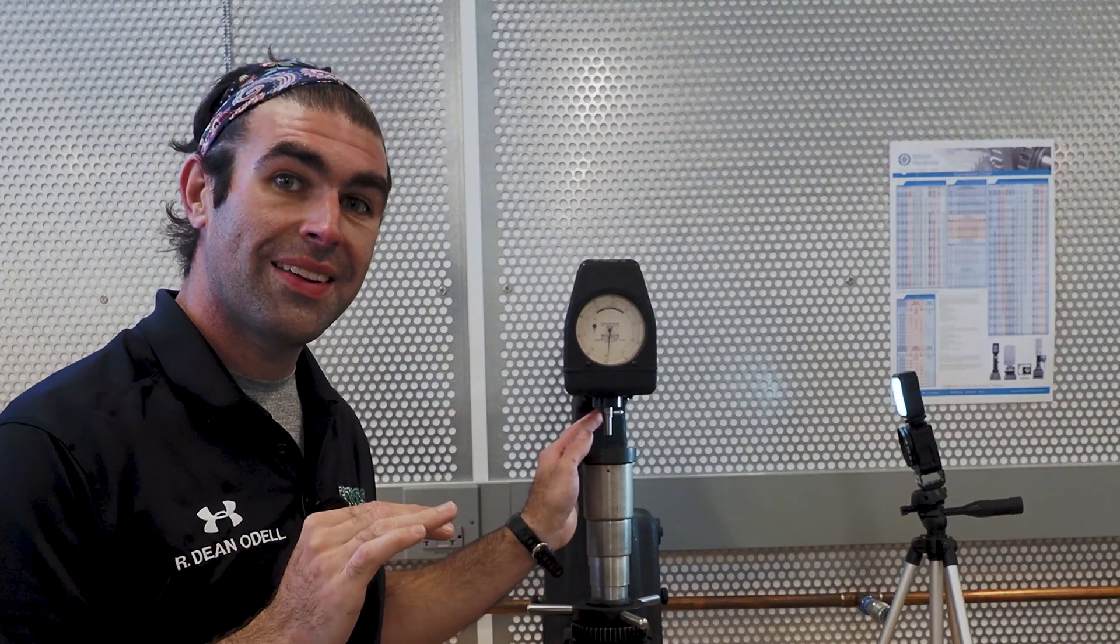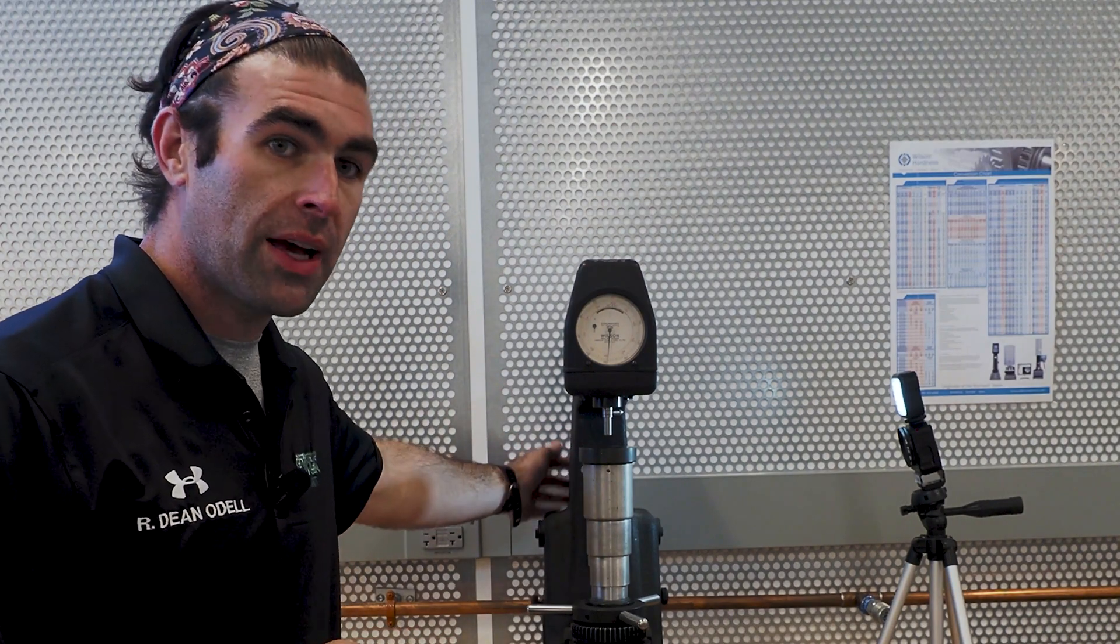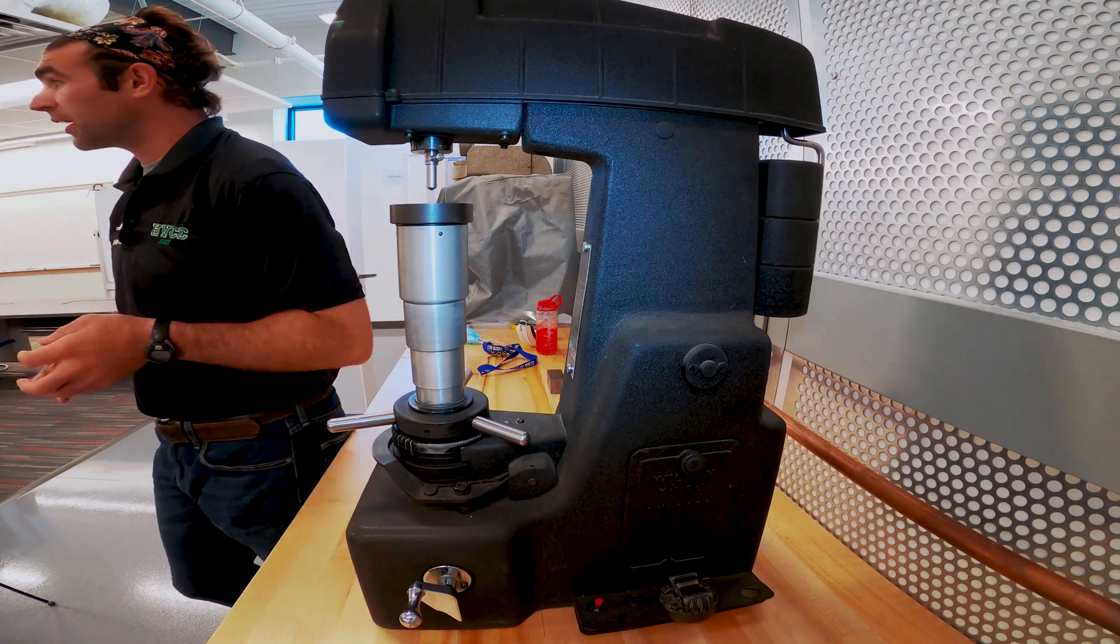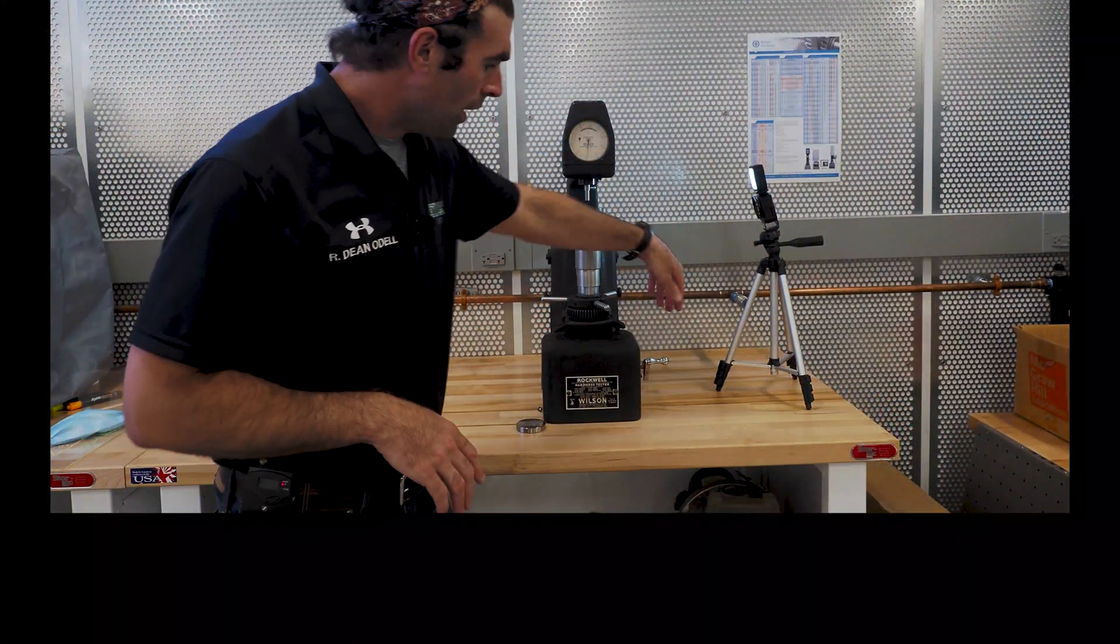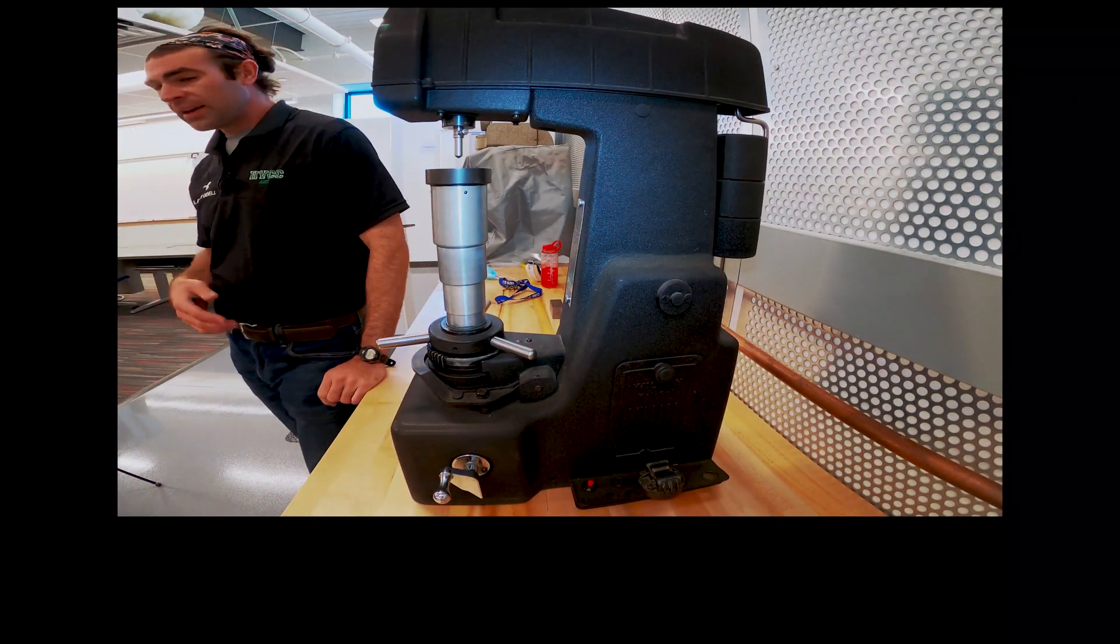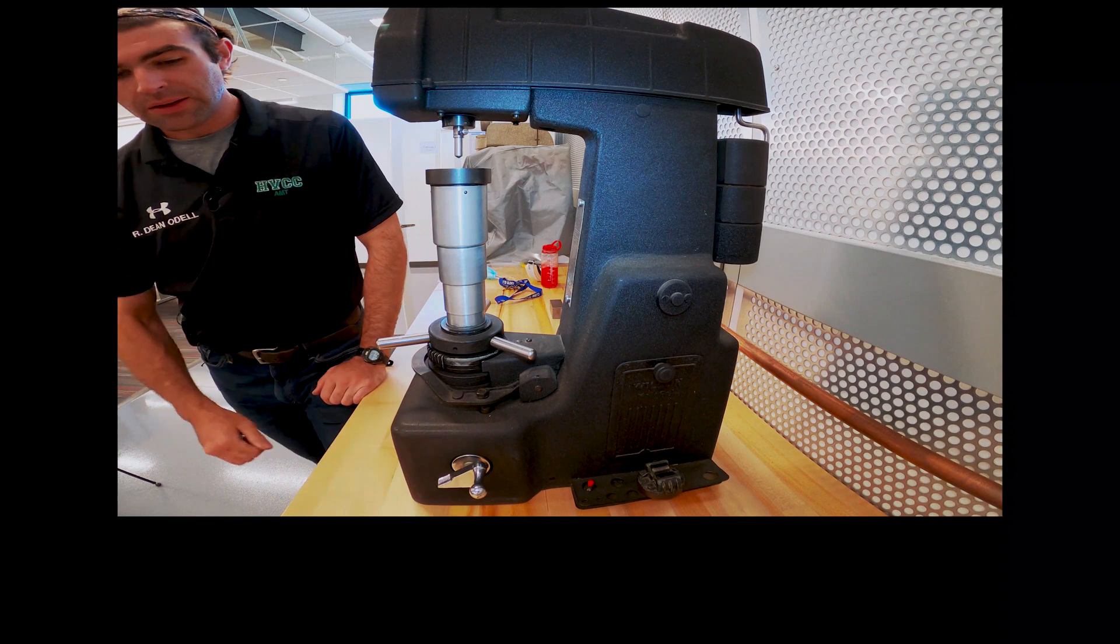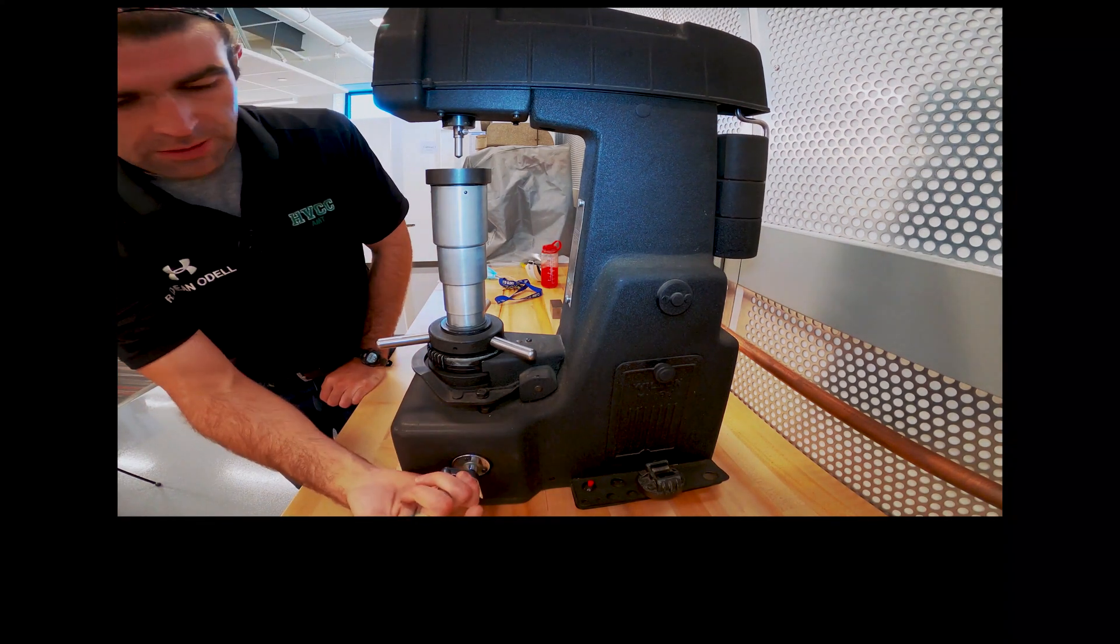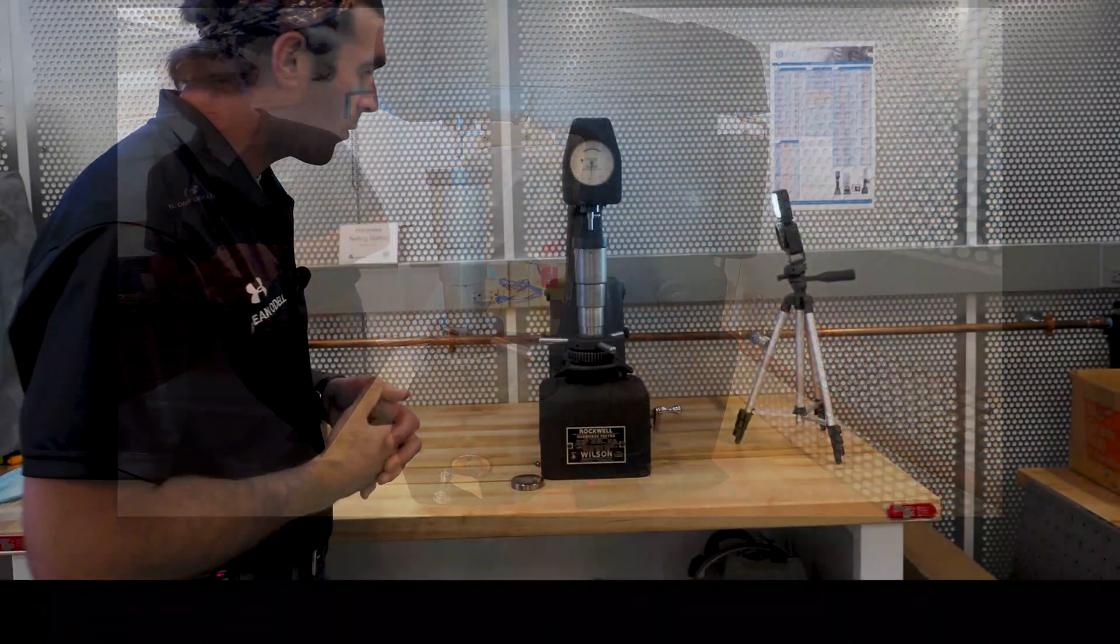If you have slack in your indenter, when you start doing the test, it'll mess up your reading because it's going to think the metal is softer than it is because it went some extra distance. Next, I'm going to check my weights back here. They're a little difficult to see, but trust me, there's 150 kilograms of force back there. I'm going to grab this handle. I'm going to make sure it's pulled all the way back as opposed to being all the way forward. So I wouldn't want to start here. I want to start right there.